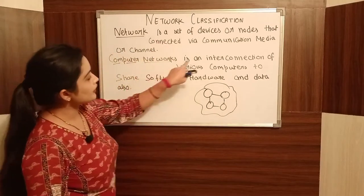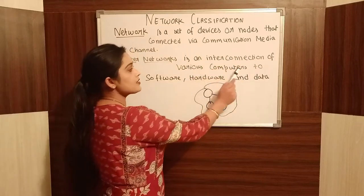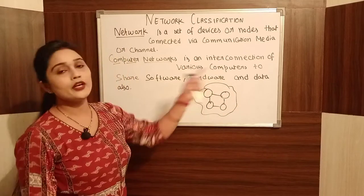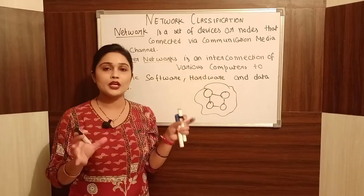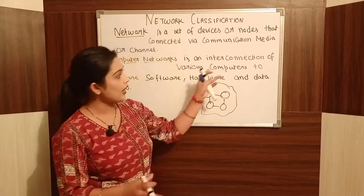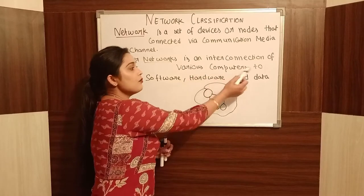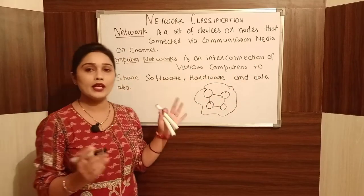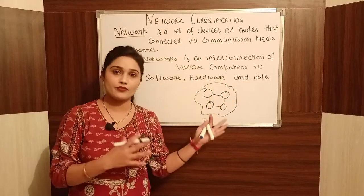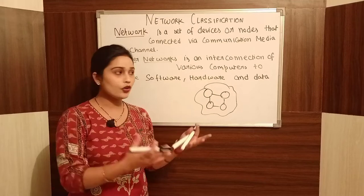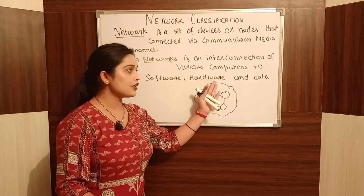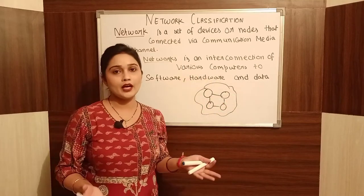A computer network is an interconnection of various computers to share software, hardware, and data. Interconnection means that when these devices are interconnected using a medium, the various computers can share software — one device can transfer files to another device — as well as hardware, and communication can be done.